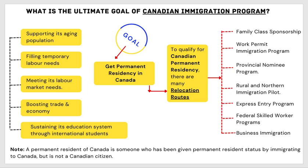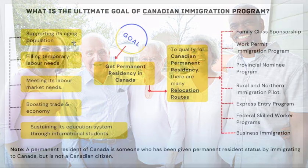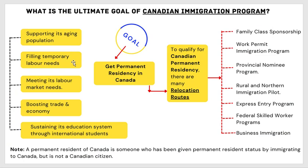To get started, let's understand the ultimate goal of the Canadian immigration program. Why was it created? Number one, it was created to support its aging population — to bring in people from other countries to support the aging population. Number two was to fill temporary labor needs in the country, which shows you why some immigration programs are not permanent. Number three was to meet its labor market needs.